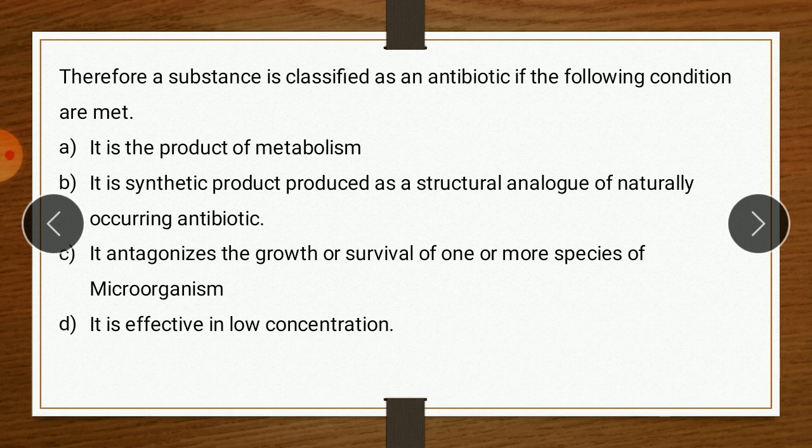In 1942, Waksman proposed the definition that antibiotics are substances produced by microorganisms which have the capability of inhibiting the growth or even destroying other microorganisms. Later proposals sought both to expand and restrict the definition to include any substance produced by a living organism capable of inhibiting the growth or survival of one or more species of microorganism in low concentration. Advances by medicinal chemists to modify naturally occurring antibiotics and prepare synthetic analogs necessitate inclusion of semi-synthetic and synthetic derivatives in the definition.